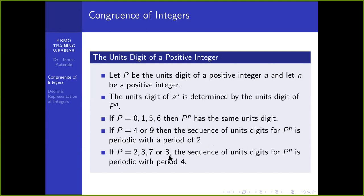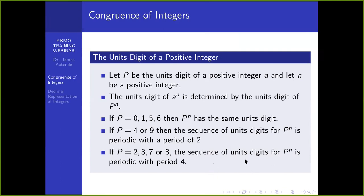You can also check this for 2, 3, 7, and 8. If those are the last digits of any integer, then p raised to n will have units digit repeating with a period of 4. For instance, 2 squared gives 4, 2 cubed gives 8, 2 raised to 4 gives 16, 2 raised to 5 gives 32 — which takes you back to 2 again. So it keeps going in fours. There are 4 unique ones, but they keep repeating every 4 numbers.